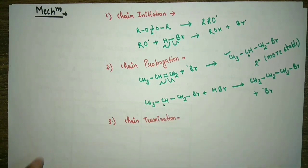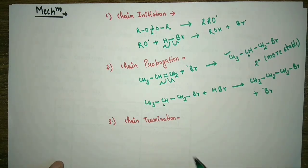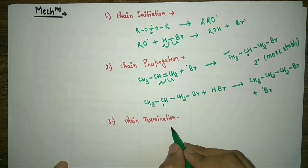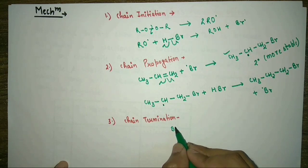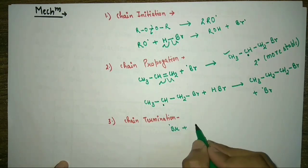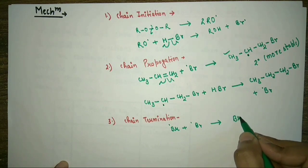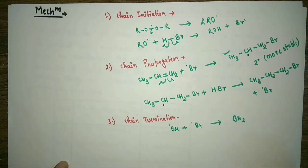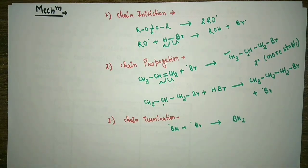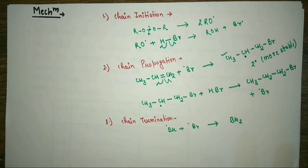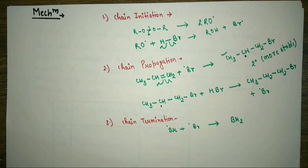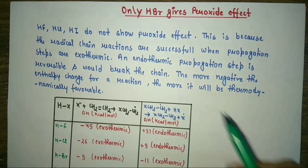In chain termination, all the free radicals that are formed combine together — for example, two bromine radicals combine to form Br2. This terminates the radical chain. This completes the full mechanism of anti-Markovnikov's rule.